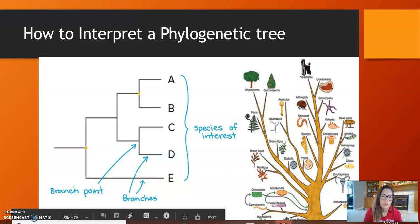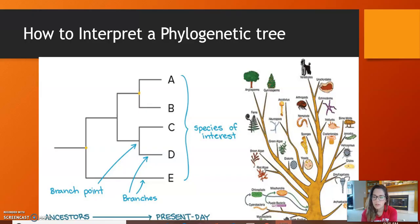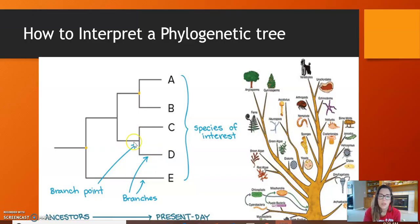Going from left to right, the organisms on the left side are ancestors — usually species that are no longer around. The organisms labeled A, B, C, D, and E are still around today; those are the species of interest. Wherever a branch splits into two — and sometimes more — that's called a speciation event, shown at that branch point.